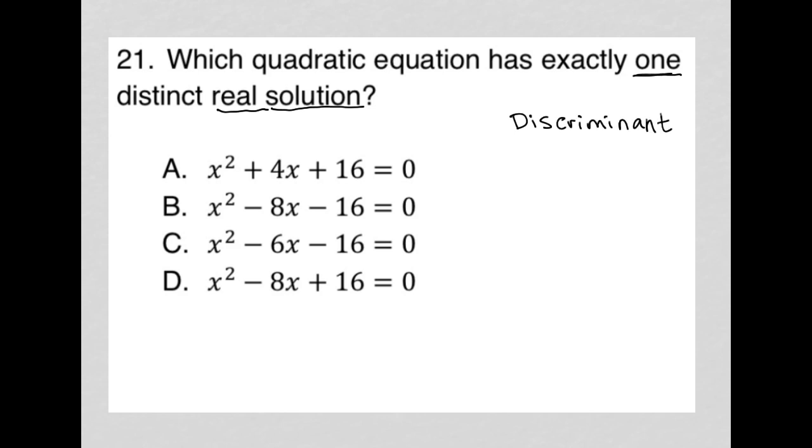The discriminant doesn't work when you have a system of equations, which could also say that you have no solutions, but it does work whenever you have a quadratic equation. This is the structure for a quadratic equation: ax² + bx + c = 0. All of our answer choices are in the proper format.